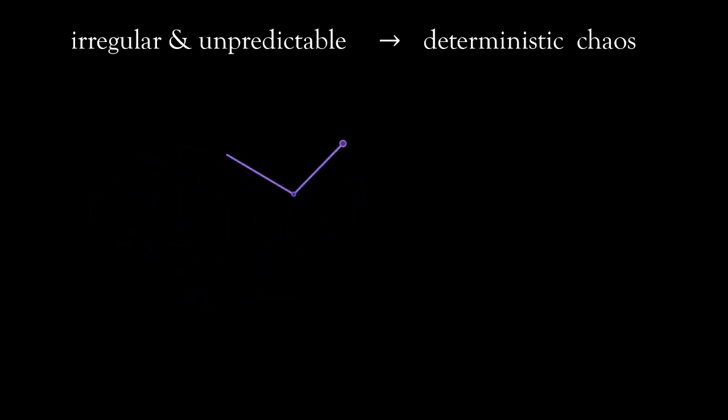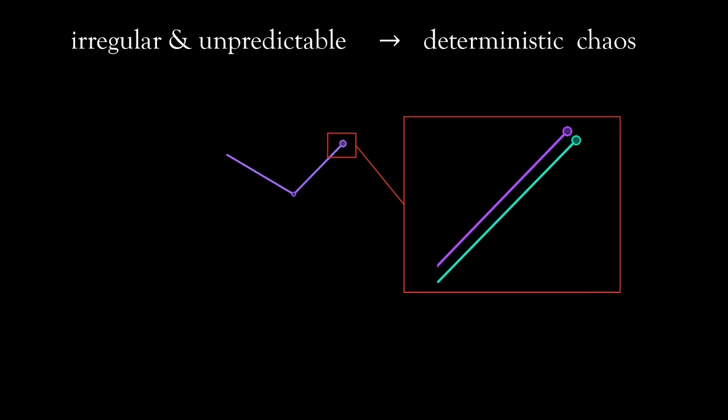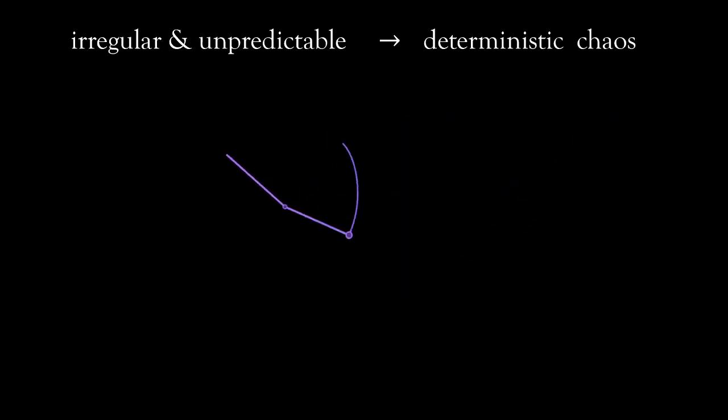So let's have a better demonstration of unpredictability. I have rewound the animation and I added a second pendulum in green color. Both pendula obey exactly the same rules, and their only difference is that they have a slightly different starting configuration. Now, let's let the simulation run.